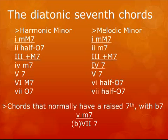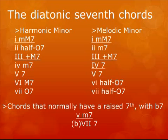In the harmonic minor — everything in C minor for simplicity — we have: the 1 minor major 7, the 2 half diminished 7, the 3 augmented major 7, the 4 minor 7, the 5 dominant 7, the 6 major 7, and the 7 fully diminished 7. Those are the diatonic chords that result from the 7th always being raised — not just in the 5 and 7.